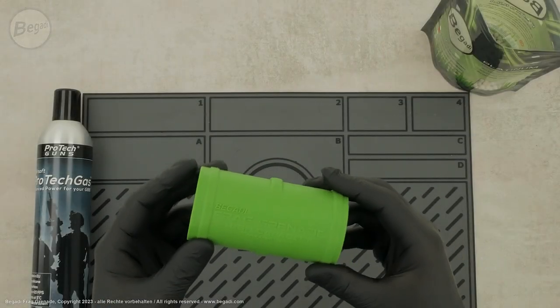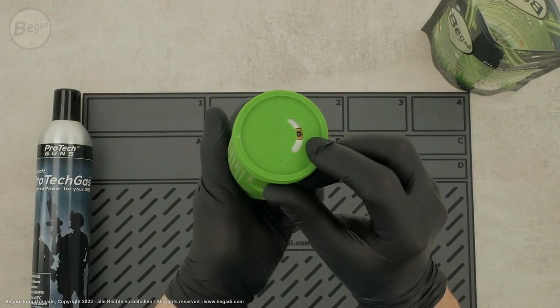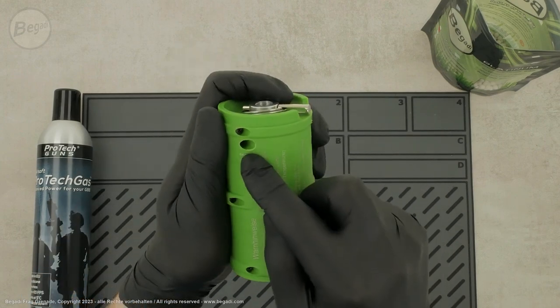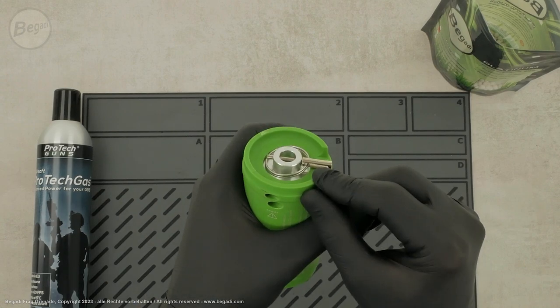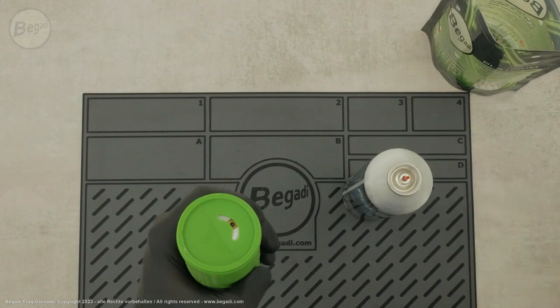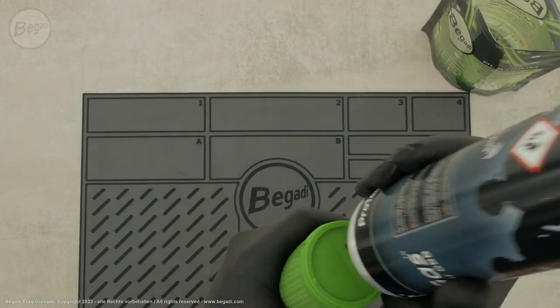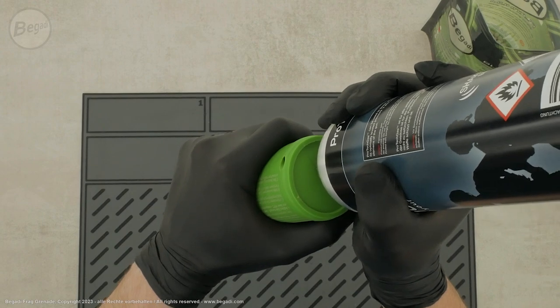To make the grenade ready for operation, you need to fill it with propellant gas and BBs. Before filling it, ensure that the safety pin is properly seated and keeping the triggering mechanism in the lower position. Fill the grenade with the appropriate propellant gas. The filling valve is located at the bottom. To fill it, turn the grenade upside down.